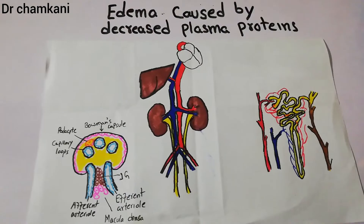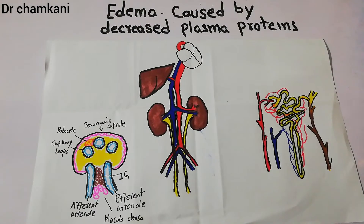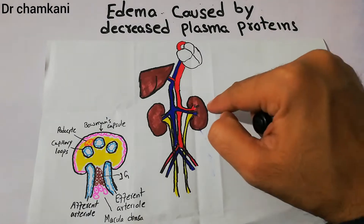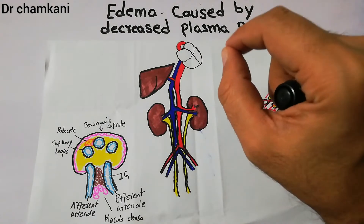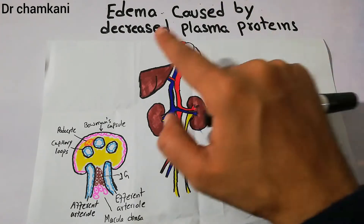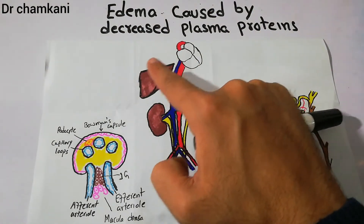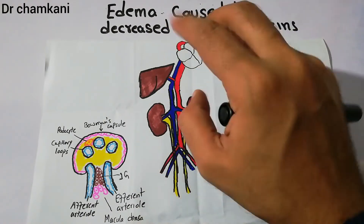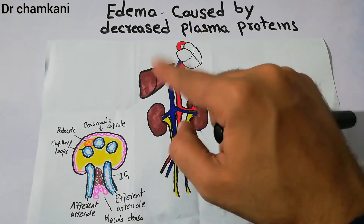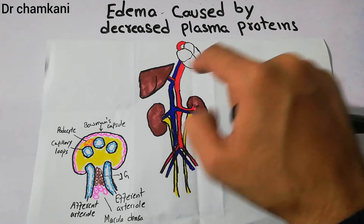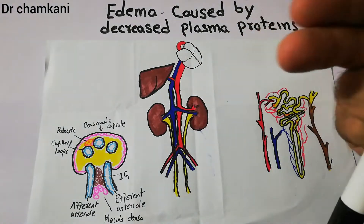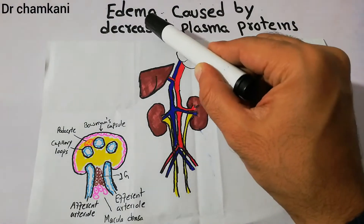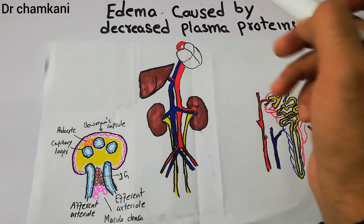There are two main important causes of low plasma proteins. One is decreased formation of proteins, especially in cirrhosis. This is the liver — if liver function decreases due to cirrhosis, in which fibrous tissues occur in the liver and the parenchyma of the liver is destroyed, protein formation decreases and the level of plasma proteins decreases.